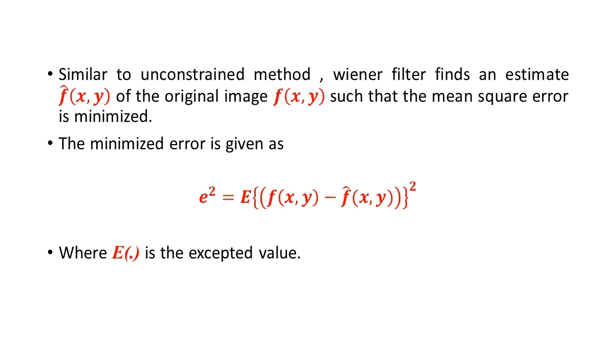Similar to the unconstrained method, Wiener filter finds an estimate f-cap of the original image f such that the mean square error is minimized. The minimized error is given as E-square. Look into the equation.